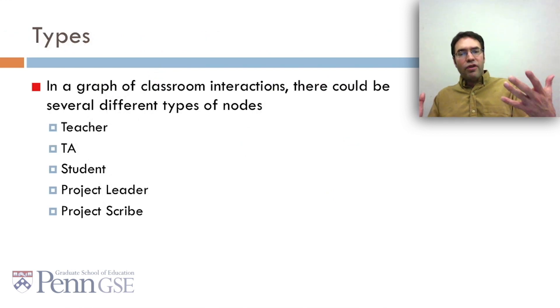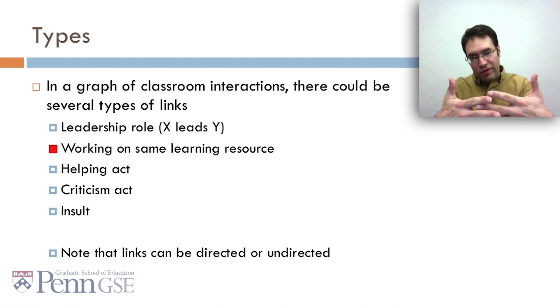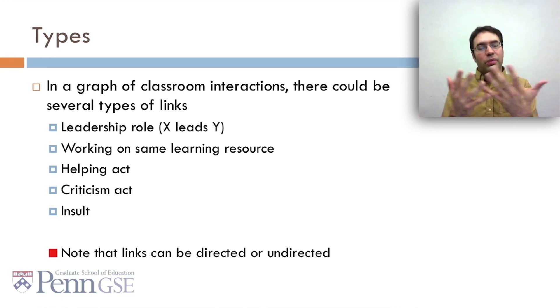Now, in a graph of classroom interactions, there could be several different types of nodes. There could be teacher nodes, teaching assistant nodes, student nodes, project leader nodes, project scribe nodes. Similarly, in a graph of classroom interactions, there could be several types of links. There could be leadership roles, maybe X leads Y. There could be working together on some learning resource. There could be a helping act. There could be a criticism act. There could even be an insult act. And you note that the links could be directed or undirected. Working on the same learning resource together kind of seems undirected. But an insult is probably inherently directed, at least at first.